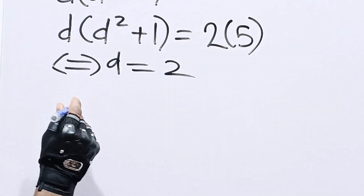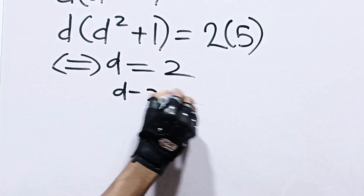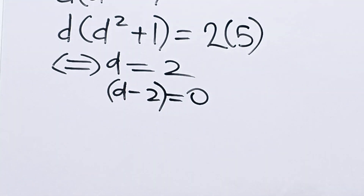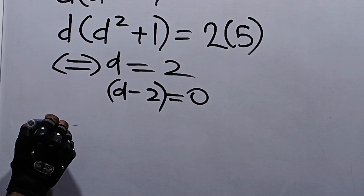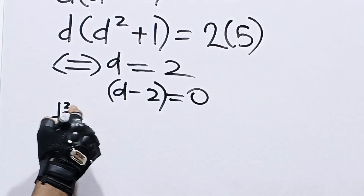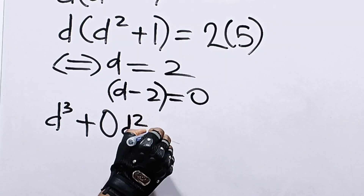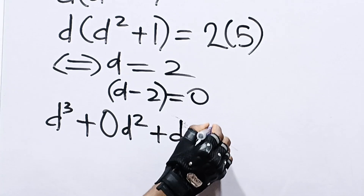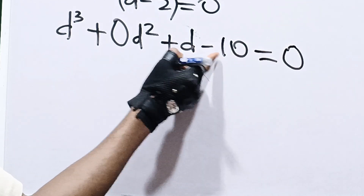Since d is 2, we can conclude that d minus 2 equals 0, meaning d minus 2 is a factor. Recall that we had d cubed plus d equals 10. We rewrite it as d cubed plus 0 times d squared plus d minus 10 equals 0, and we will now divide this polynomial by d minus 2.